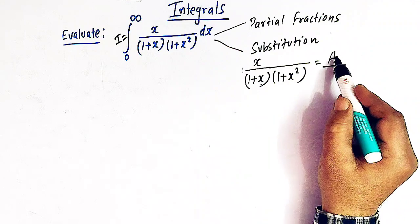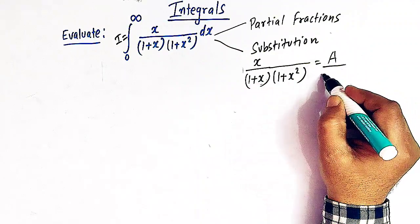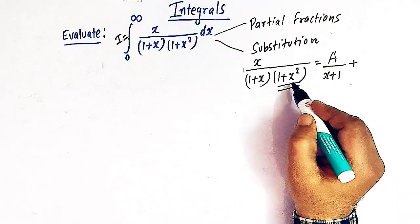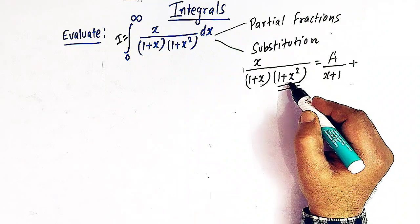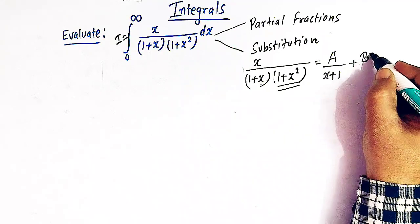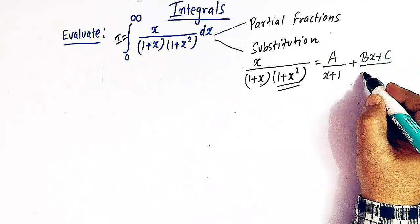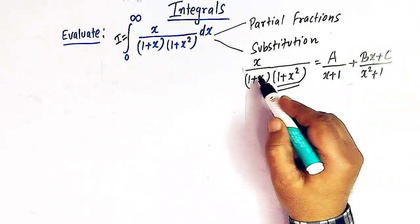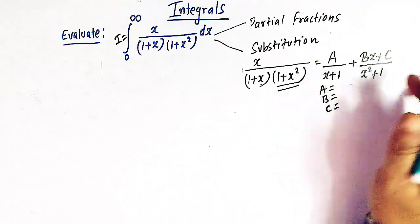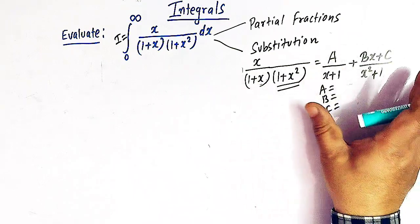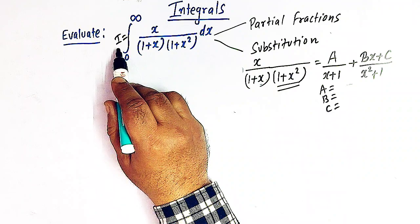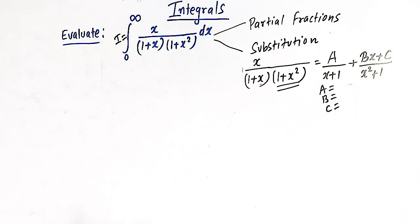We can write A over (x plus 1) since we have a linear factor, and then since we have a quadratic function that cannot be resolved into linear factors, we write a term like (Bx plus C) in the numerator over (x squared plus 1). We could find the values of A, B, C and then integrate, but here we are not going to use the method of partial fractions.